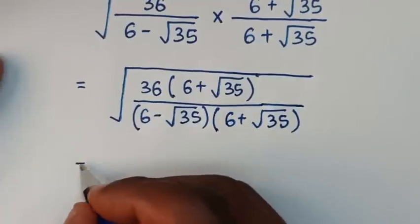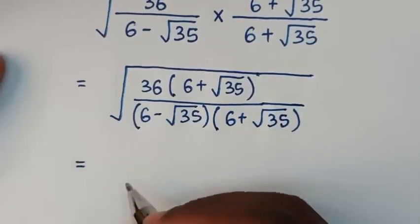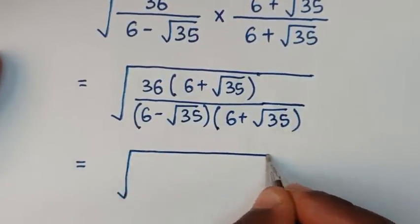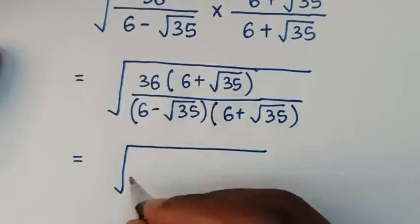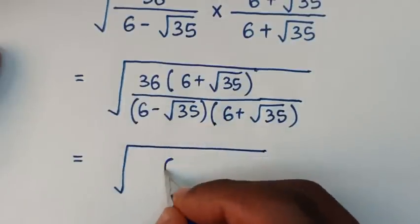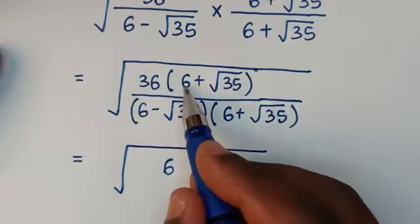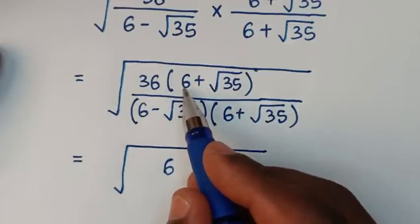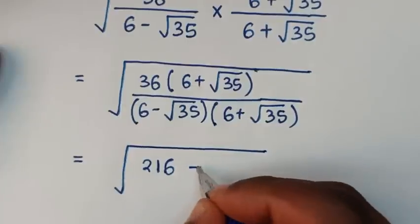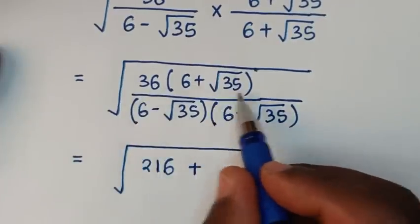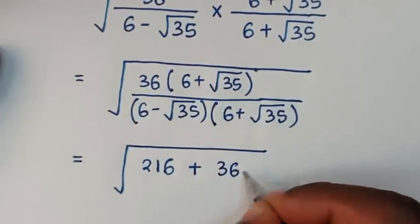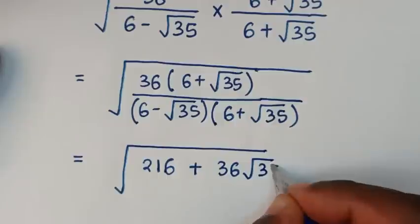Then it will be equal to square root of 36 times 6. 6 times 6 is 36, so we get 36, plus 36 times square root of 35. It will be 36 square root of 35.